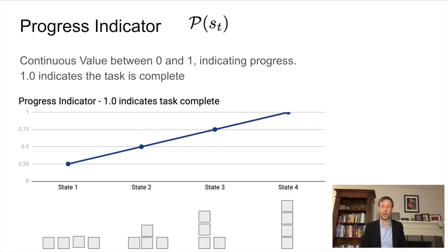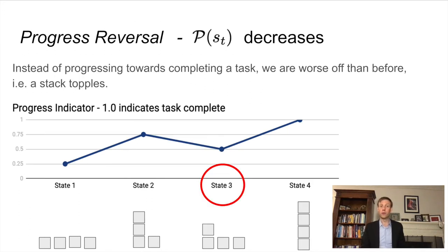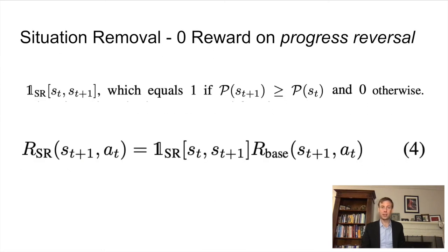Next, we have our progress indicator, which is a continuous value between zero and one, which indicates task progress. One means the task is complete. The example here shows four example states as the stack is assembled, where progress grows from 0.25 with one block in height up to one for a stack of four. A progress reversal is when the progress function decreases. So if the initial state is 0.25 and you get up to a stack of three at some later state, then something knocks it over, your progress is reversed as in state three here. In the case of a progress reversal, we perform situation removal. This harkens back to the dog example where we do a zero reward on progress reversal. The situation removal parameter is one if the progress stayed the same or improved and zero otherwise.